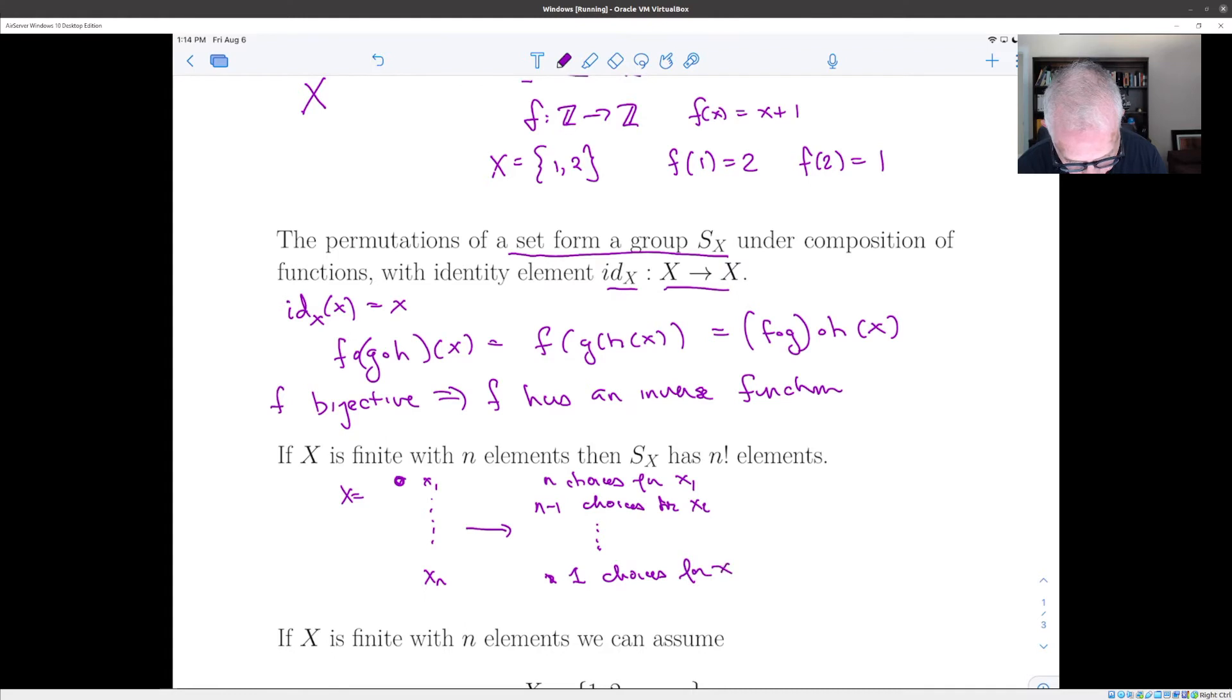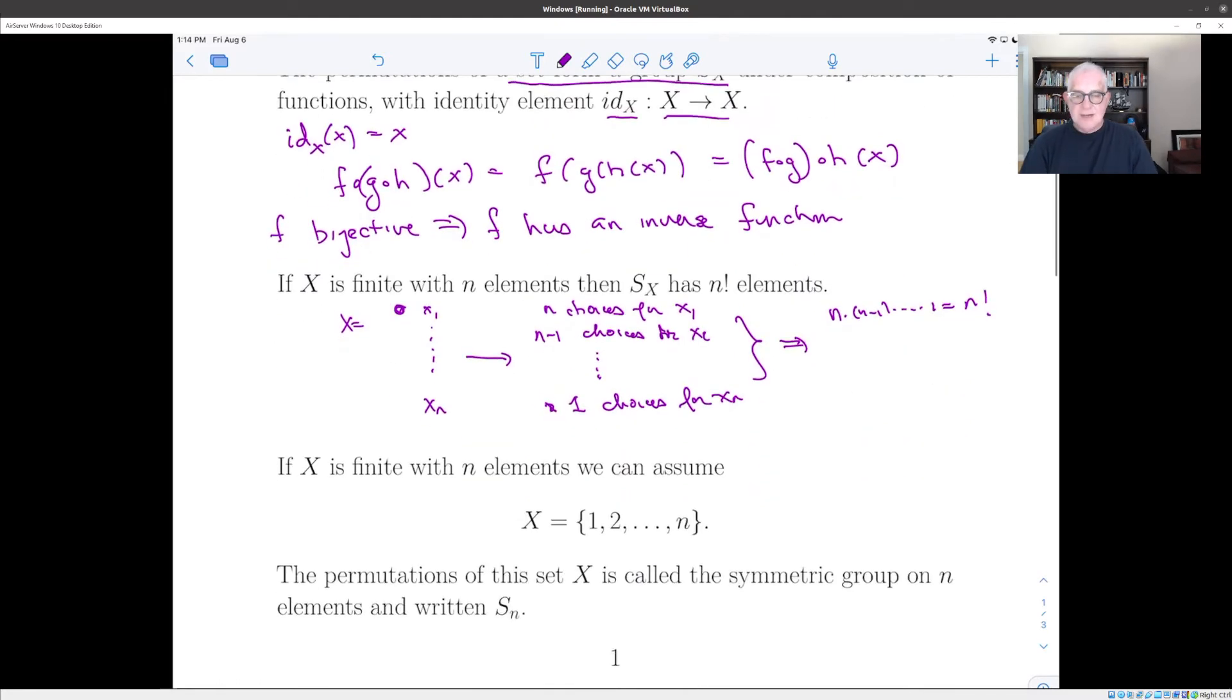and so we don't have any choices left. We have to send x_n to whatever's left over. And so by what sometimes is called the multiplication principle, this is n times n minus one times one, which is n factorial possible permutations. And if we're working with a set with n elements, we might as well just assume that it's the set of numbers from one up to n, because if we had a general set, we can just number the elements from one up to n, work with one up to n,